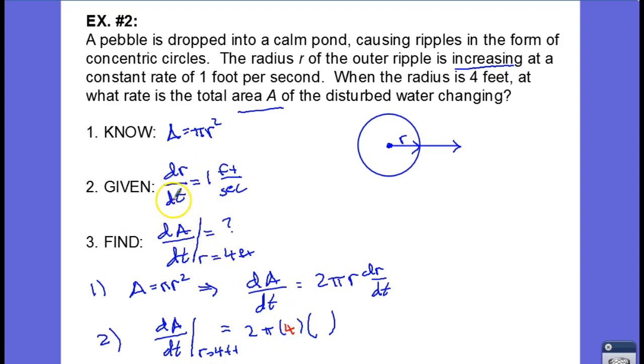And we're given that dr dt is equal to 1. So now we have 2 times 4 is 8 times 1 is 8, 8 pi.